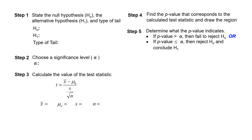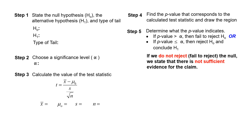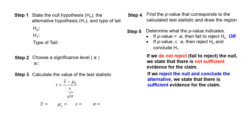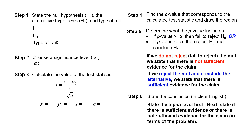Step five: compare the p-value to alpha. If the p-value is large, we do not reject the null. If it is small — less than or equal to alpha — we reject the null and conclude the alternative. If we do not reject, there is not sufficient evidence for the claim; if we do reject, there is sufficient evidence. The claim is always the alternative; the null is always our assumption. Step six: state the conclusion in clear English, beginning with the alpha level.